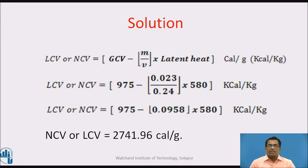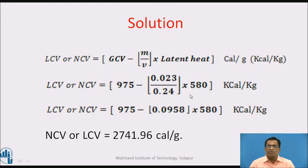LCV for Numerical 2: by substituting the values of GCV, M, V, and latent heat into the formula LCV = GCV − (M / V) × latent heat: LCV = 975 − (0.023 / 0.24) × 580, giving LCV = 974.44 kcal/kg.